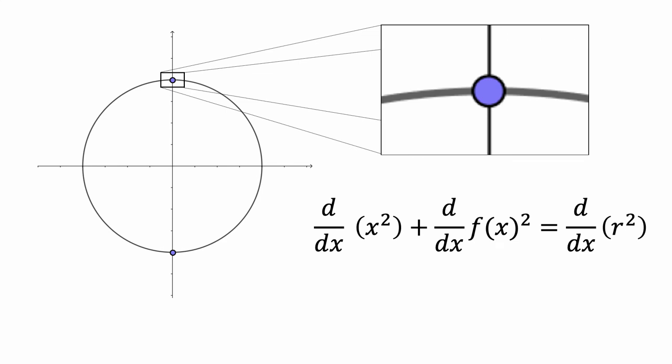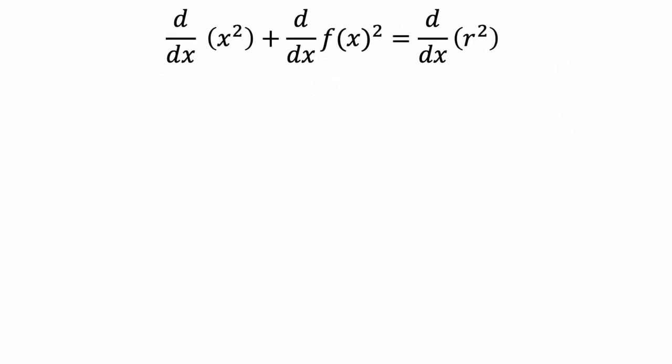Let's think about how we can work with this. If we look at the first term, the derivative of x squared with respect to x is just 2x. If we look at the last term, since r is a constant number, its derivative is 0.